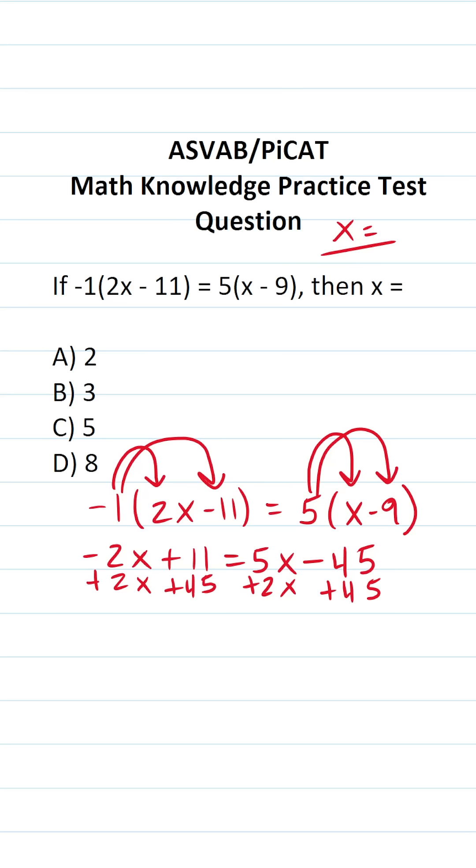Negative 2x plus 2x crosses out. What is 45 plus 11? You should be able to do that mentally. 1 plus 5 is 6, 4 plus 1 is going to be 5 equals...